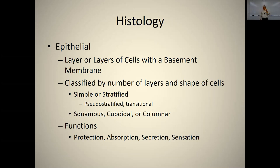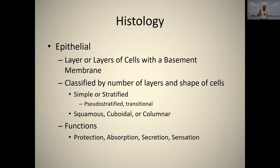How do you classify epithelial tissue? First, by the number of layers of cells: one layer is called simple epithelial, and two or more layers is called stratified. Second, by the shape of the cells: flat cells are called squamous, square cells are called cuboidal, and rectangular cells are called columnar. There are all different combinations of these styles.